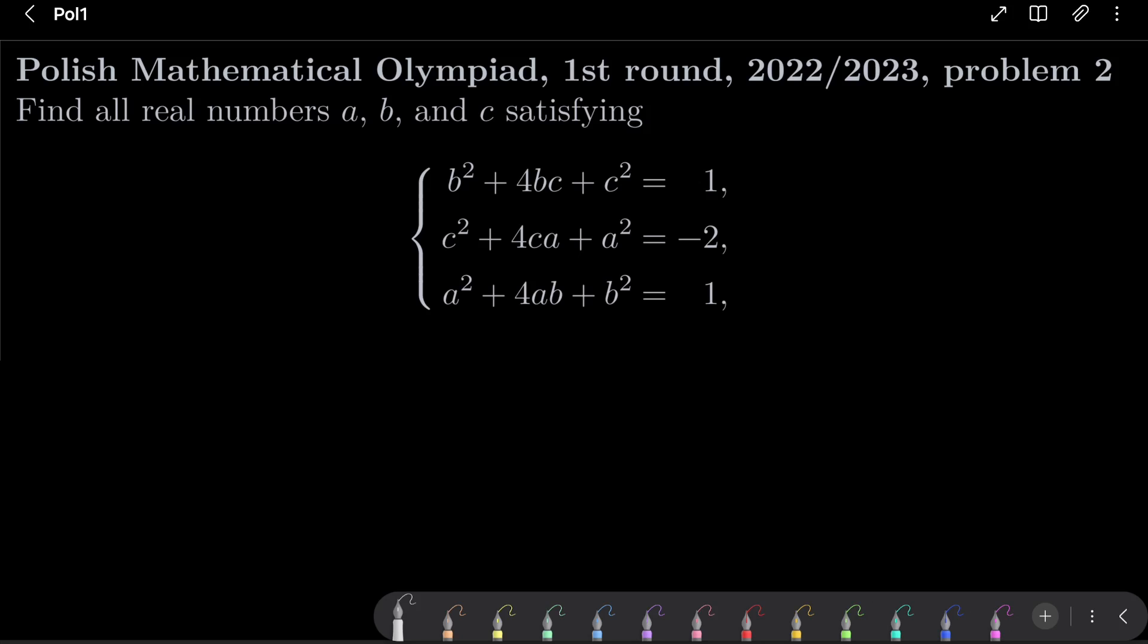We wish to find all real numbers a, b and c, satisfying the following system of equations: b² + 4bc + c² = 1, c² + 4ca + a² = -2, a² + 4ab + b² = 1.